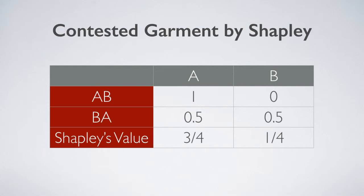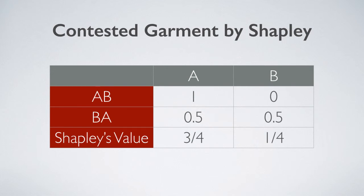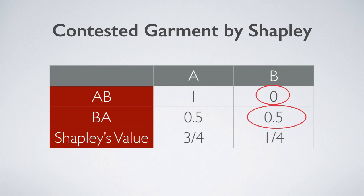For person A, his marginal value in the permutation AB is 1 — that is, when he appears first, he gets the whole government. For person B, his marginal value in the permutation AB is 0, since A has already claimed the whole government. But his marginal value in the permutation BA is 0.5, which is what B himself had wanted.